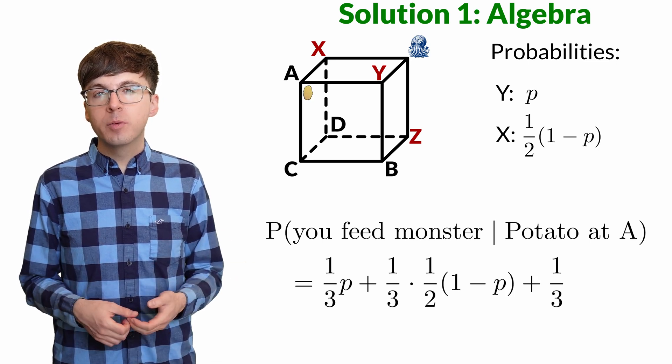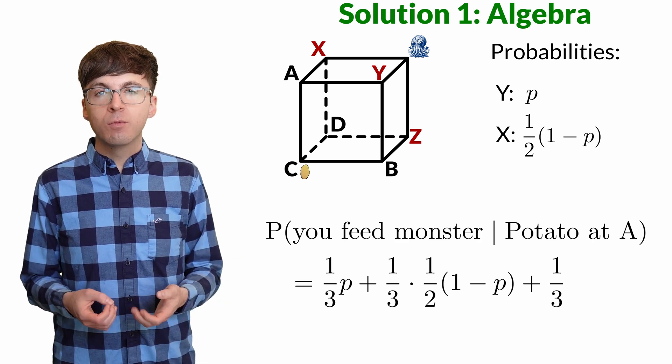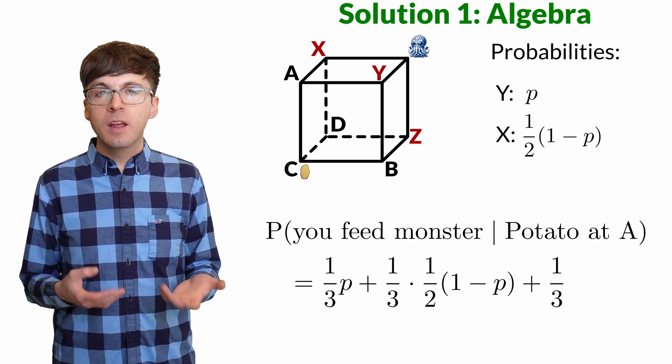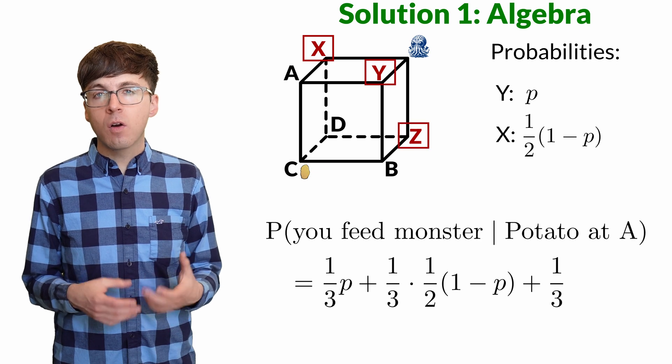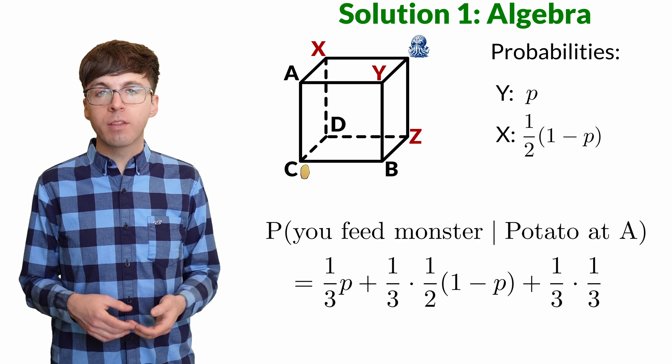And lastly, there's a one-third probability the potato ends up at this point. Let's call it c. Relative to c and the monster, the points x, y, and z are all symmetrically placed. So we all have an equal chance of feeding the monster. One-third.